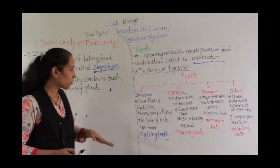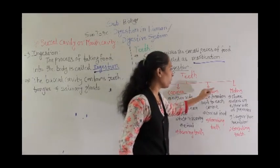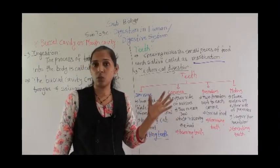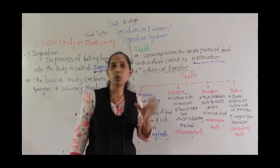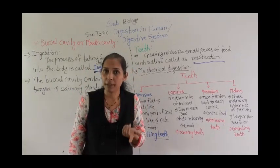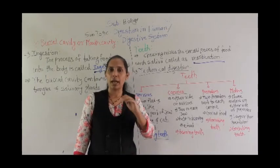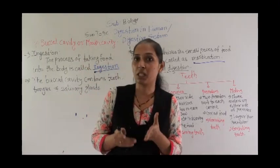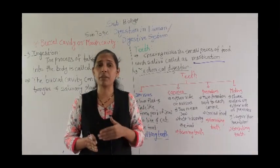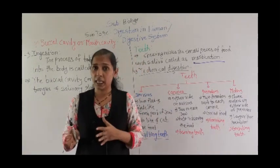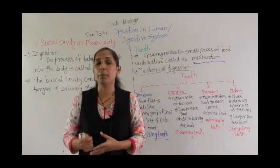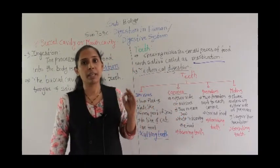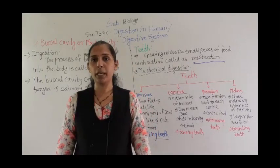So these are the four types of teeth: incisors, canines, premolars, and molars, which are present in the jaw of every person. An adult person has 32 teeth — 16 in the upper jaw and 16 in the lower jaw. Today we discussed the digestive system, including the alimentary canal, associated glands, and the buccal cavity with the types of teeth. We will meet in the next video. Thank you.